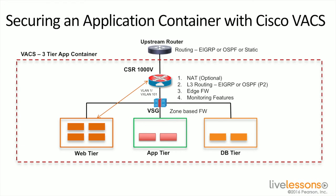I've also got the ability to use a secure application container with VAX, which gives you much more flexibility in how you deploy this. Here we're showing a three-tier app container. We've got the CSR1000V, with multiple segments used to segment the web tier from the app tier and the database tier. I'm using Virtual Security Gateway to provide security segmentation between the virtual machines, and using 1000V to support NAT, layer three routing, and all those other functions within UCS Director.